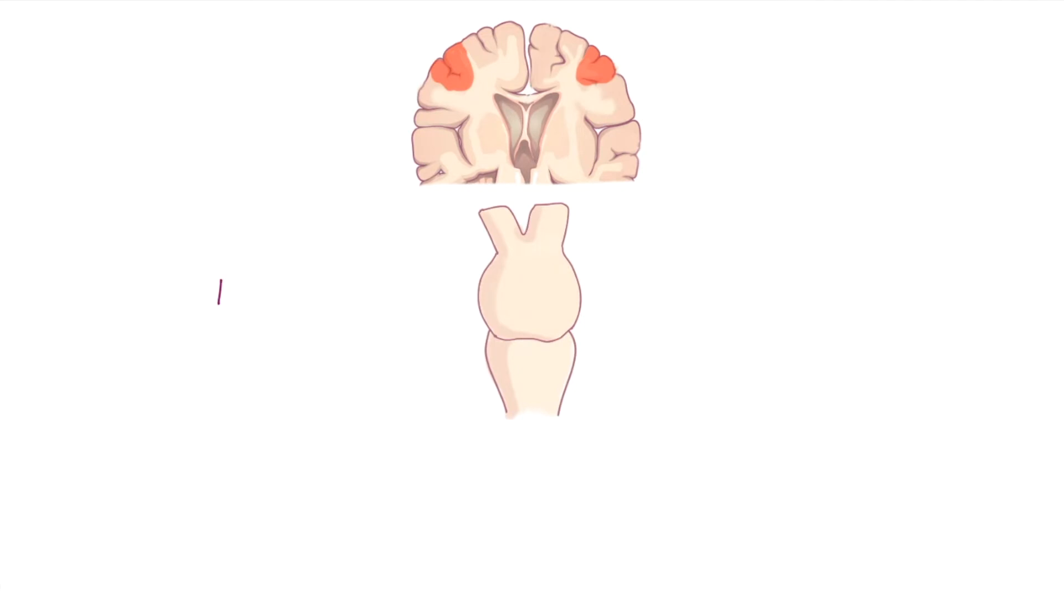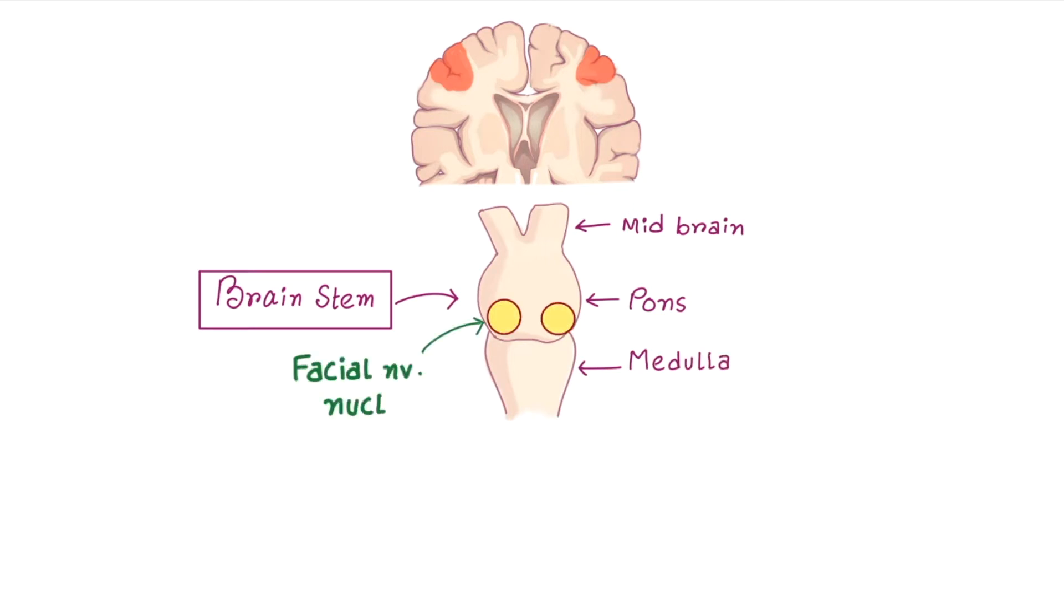Now here you can see the brain stem. Uppermost portion is midbrain, then pons and then medulla. Facial nerve nucleus is present at the lower half of the pons. Lower motor neuron of facial nerve comes from these two nuclei.